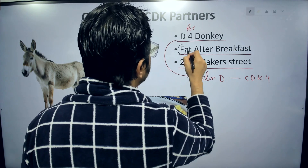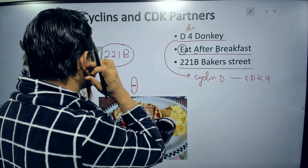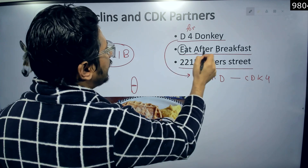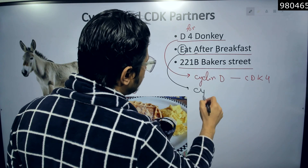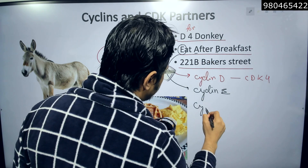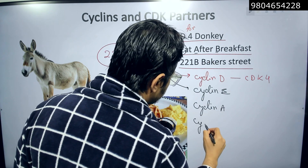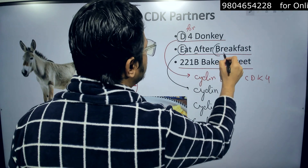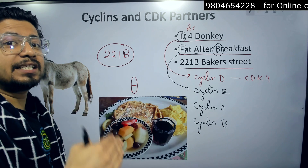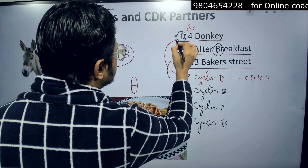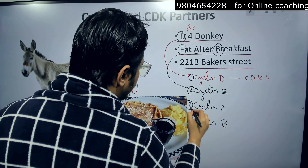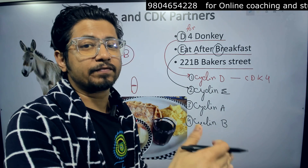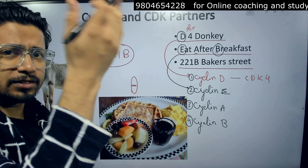Next, we move to 'Eat After Breakfast.' Notice that the first letters of each word are in capital letters — E, A, B — to show they are more important. So we have cyclin E, then cyclin A, then cyclin B. We start with cyclin D and we end with cyclin B. The sequence you need to remember in order is: cyclin D, cyclin E, cyclin A, cyclin B. This order is very, very important. There is a reason it is organized that way. D is already established, and Eat After Breakfast gives us E, A, B.